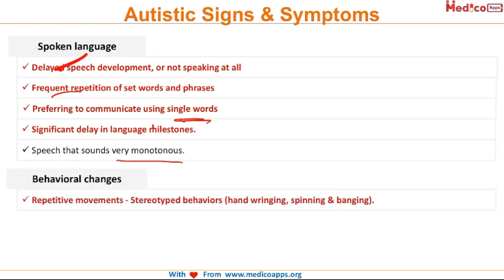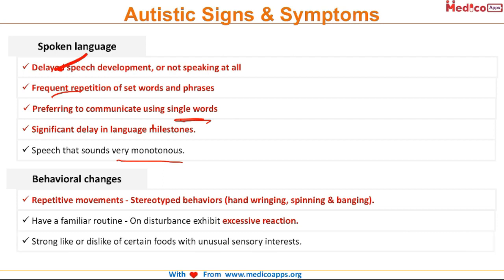Looking at the behavioral changes: there will be repetitive movements or stereotyped behavior like hand wringing, spinning, and banging. They have a very familiar routine and once that familiar routine is disturbed, they will exhibit an excessive reaction. They also have a strong like and dislike of certain foods with unusual sensory interest.